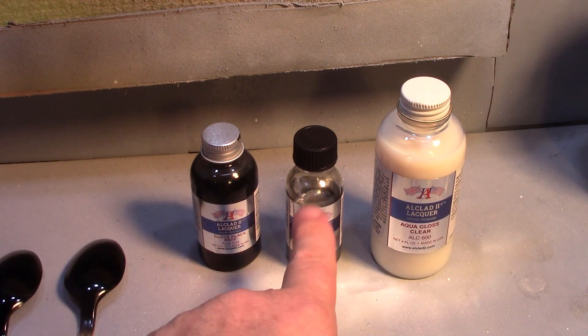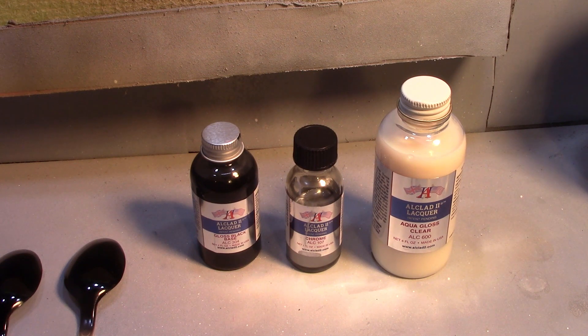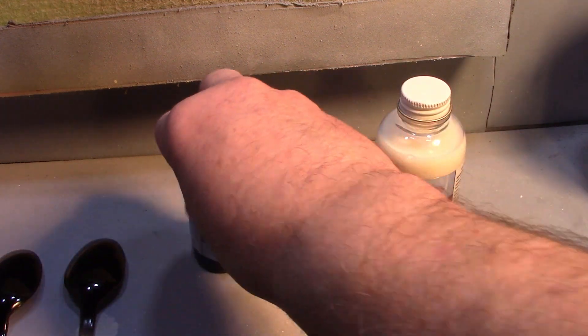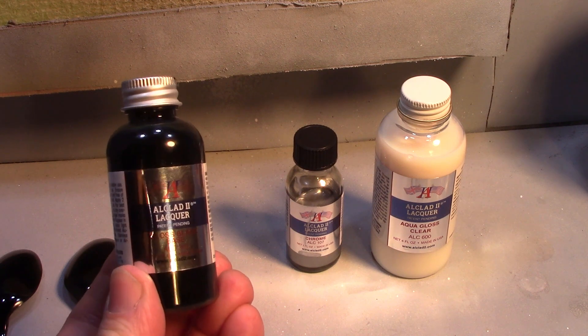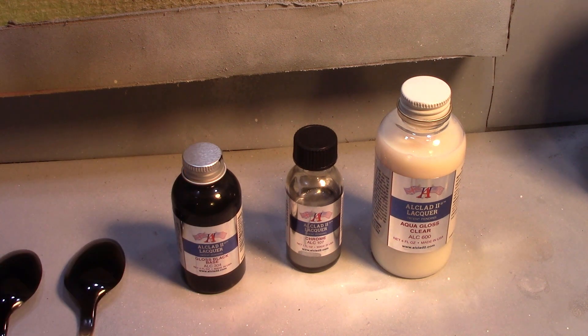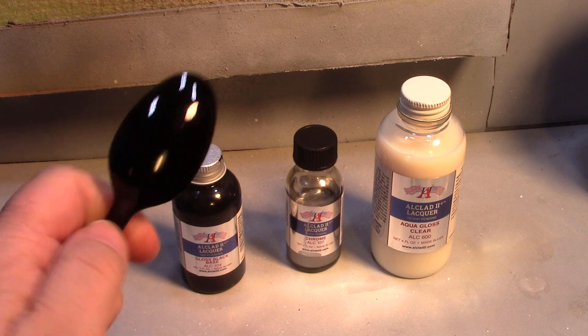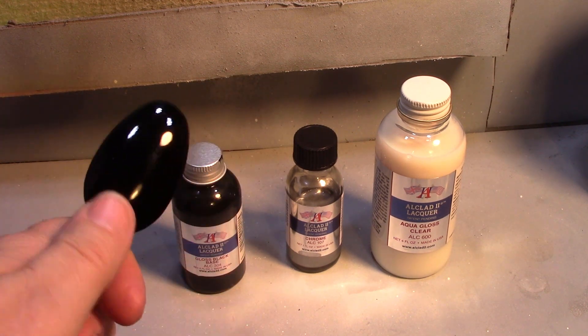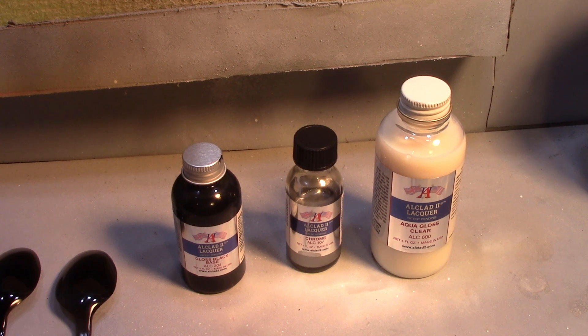Now, I tried this on a couple of other black bases that I have and it didn't really work very well. The chrome didn't come out very well. And I asked around a little bit and wouldn't you know, you need the Alclad gloss black base. This is a base paint and it's a really nice looking paint. I would paint a model with this any day. Look at how shiny that is—nice and clean, really comes out nice.